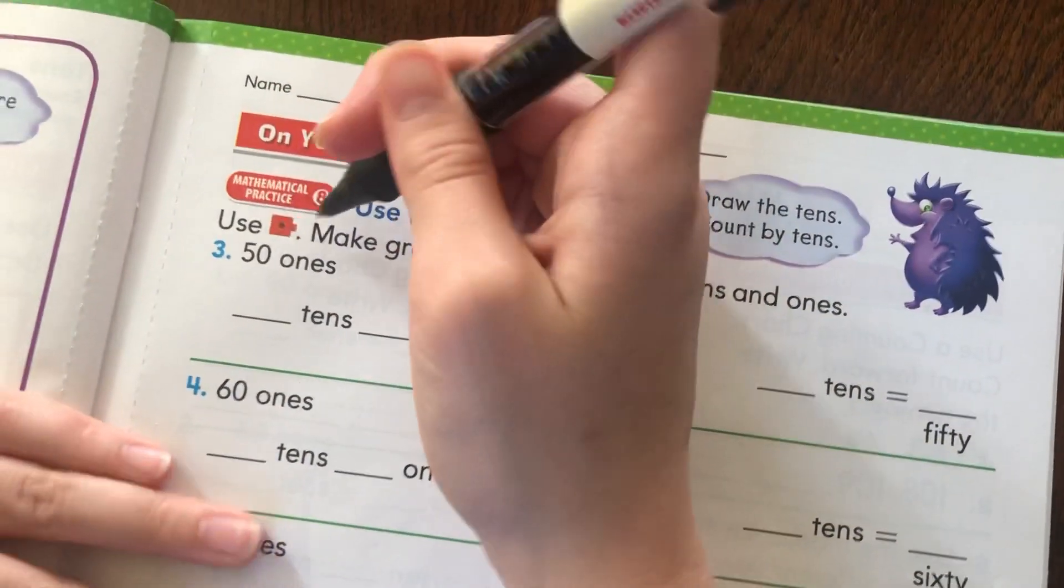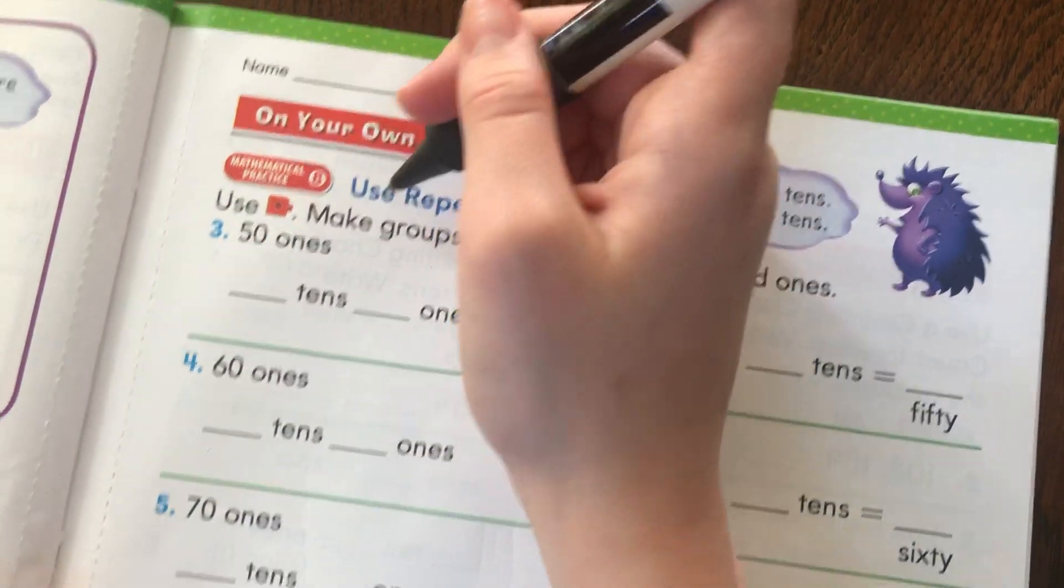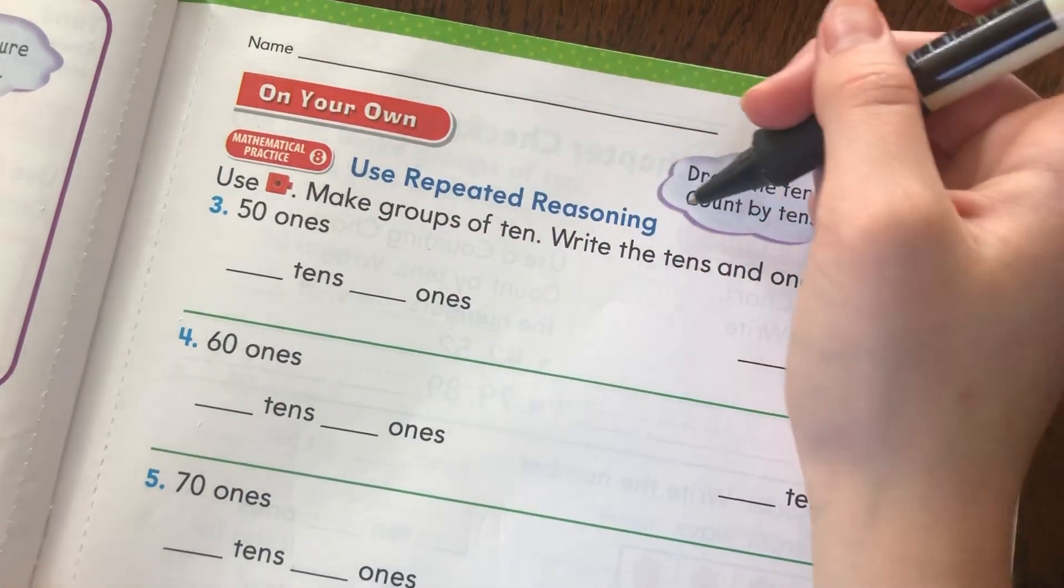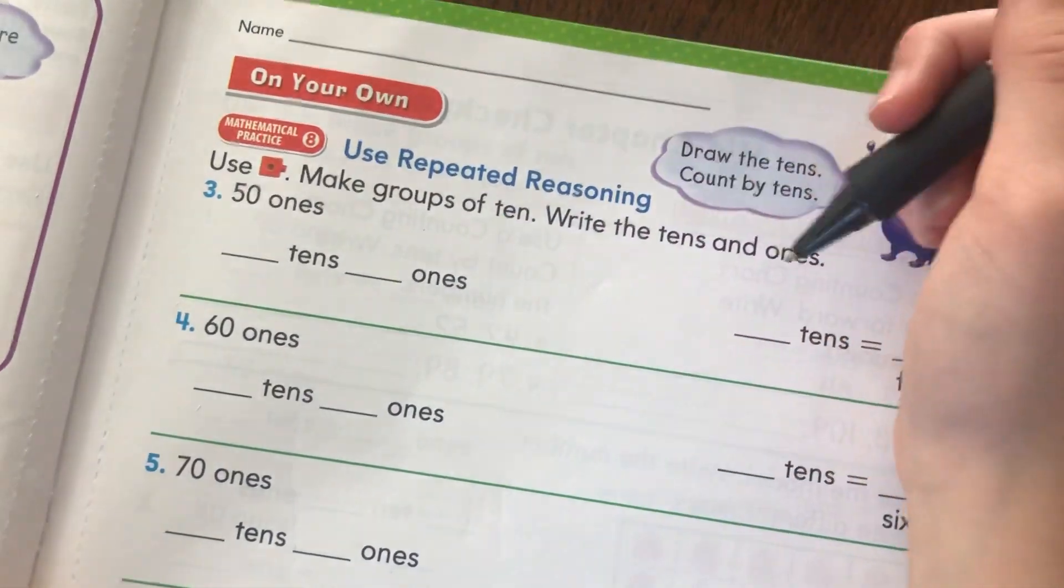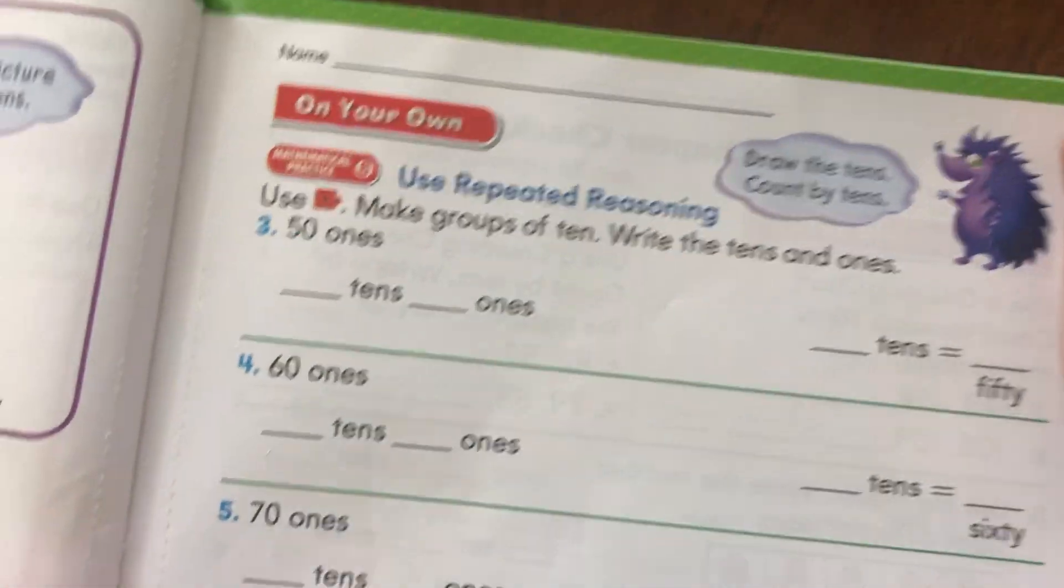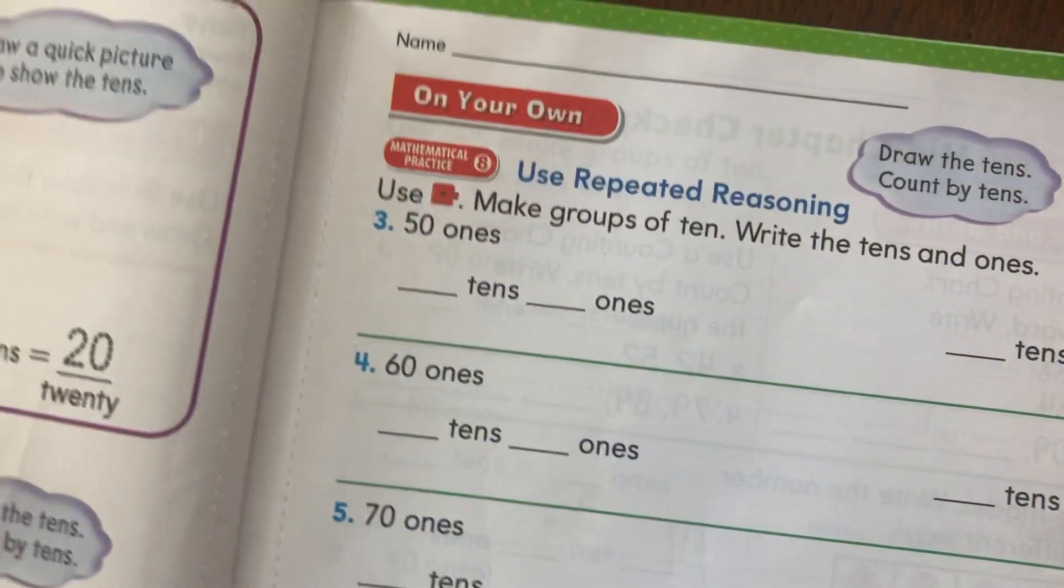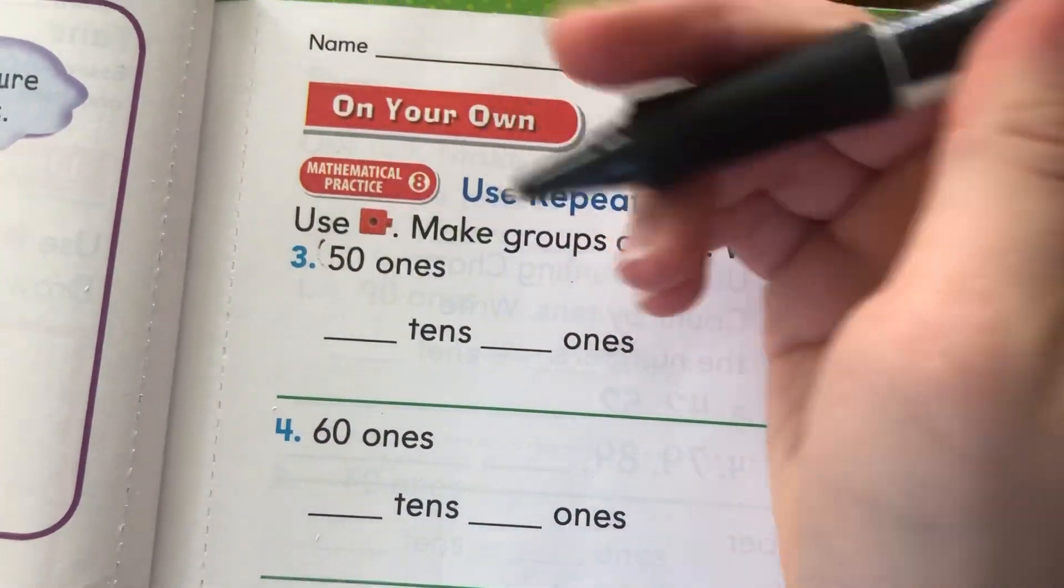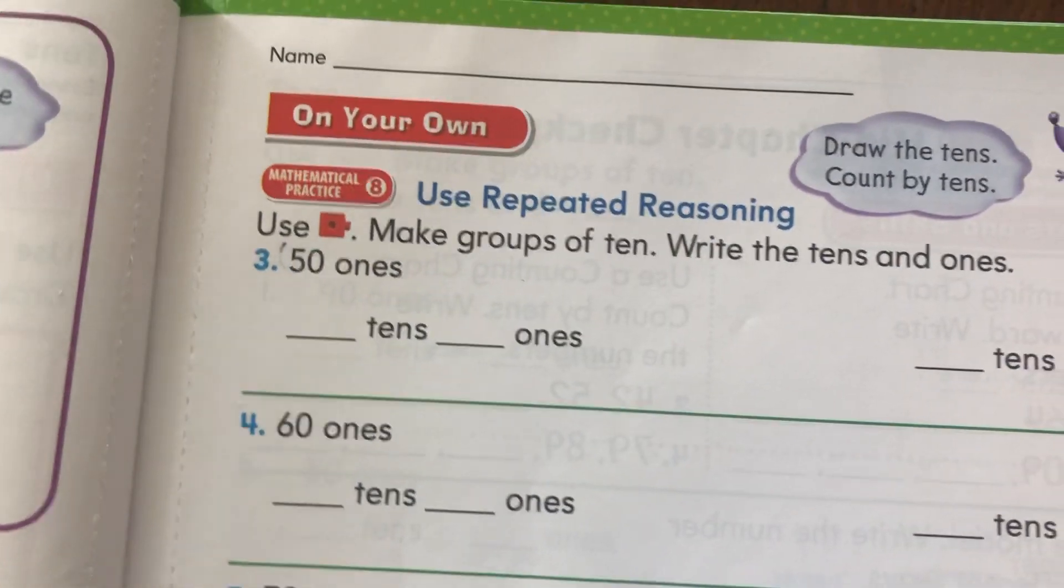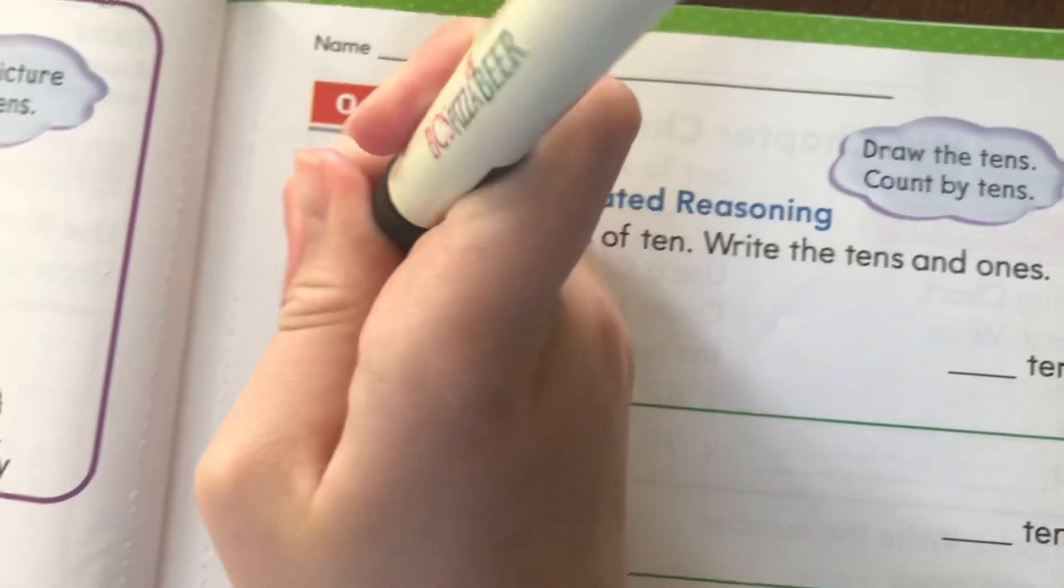Okay, it says use connecting blocks, make groups of ten, write the tens and ones of fifty ones. Can you do this by breaking it apart? Like what number do you see in the tens column right there? Well, in the tens column, I see a five, so I already know that there's going to be five tens. Five tens, so let's put a five here.